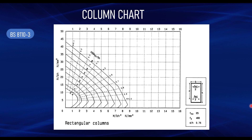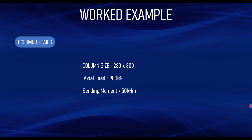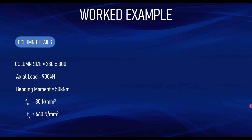Let's look at a worked example. We have a column with a size of 230 mm by 300 mm. The axial load on the column is 900 kN and the bending moment is 50 kNm. We take fcu as 30 and fy as 460. From these, b equals 230 mm and h equals 300 mm. We now determine the effective depth of the column.